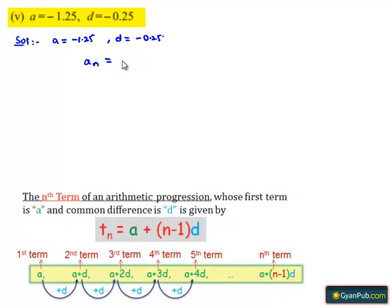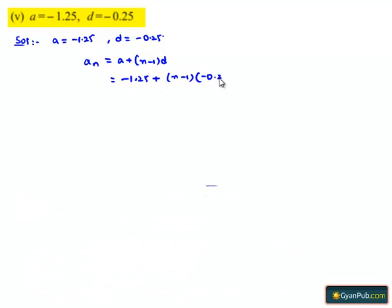Here we know that the nth term aₙ is given by a + (n-1)d. That is equal to -1.25 + (n-1)(-0.25), which is equal to -1.25 plus, here...